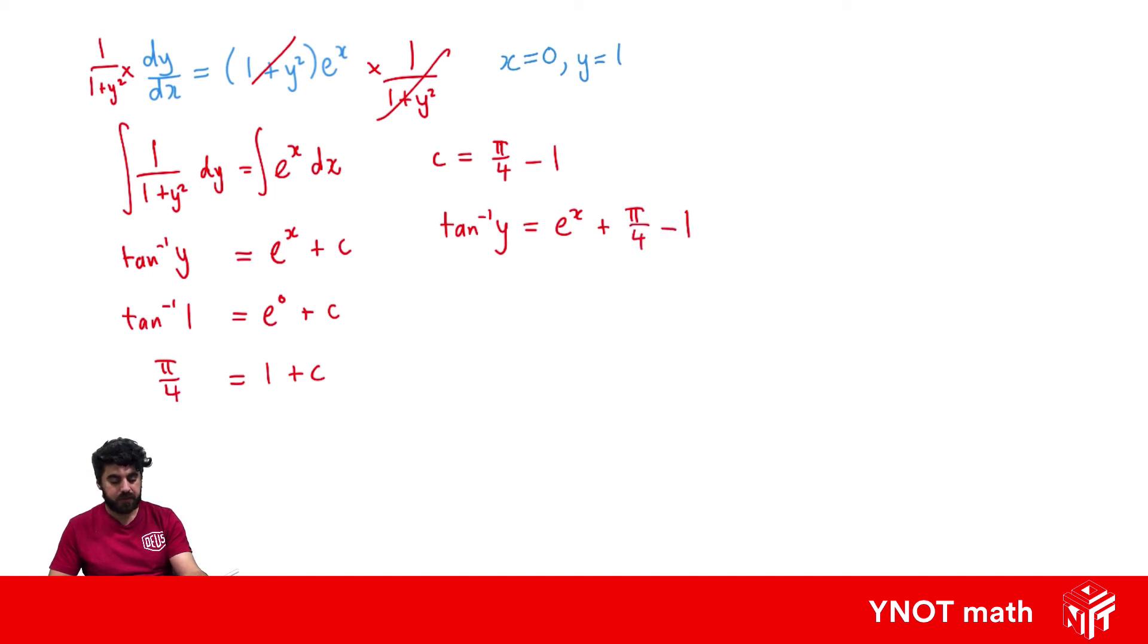But we need to make y the subject. So we'll take the tan of both sides. Take the tan of this and the tan of this. Now the tan and the inverse tan cancel. So we just get y equals tan of e to the x plus pi on 4 minus 1 as our solution to this differential equation.